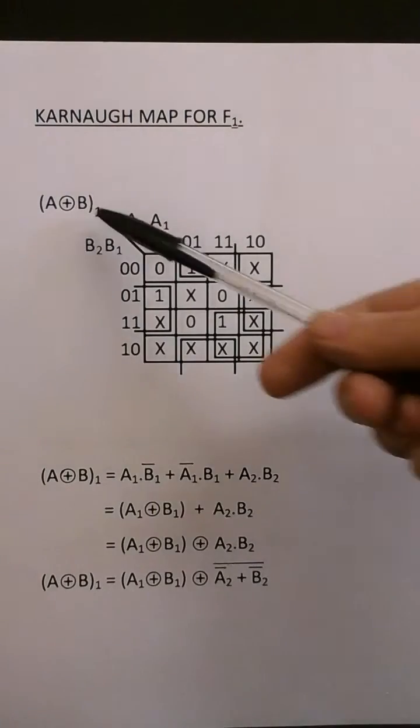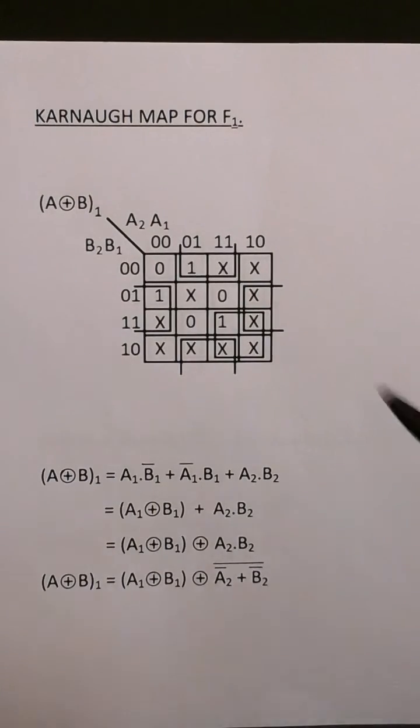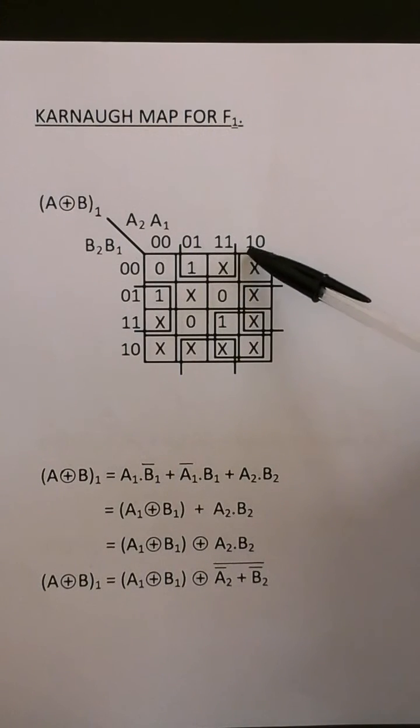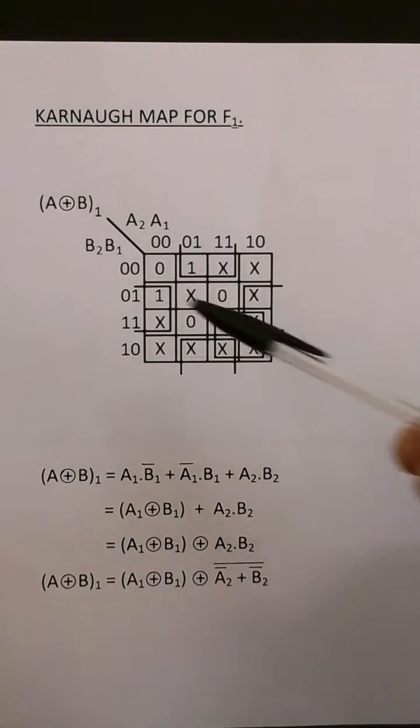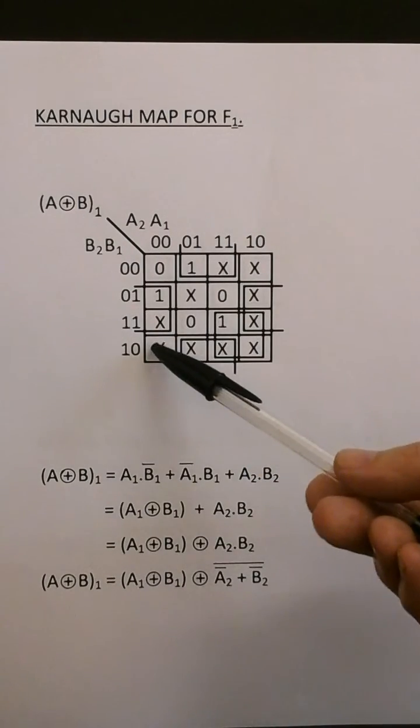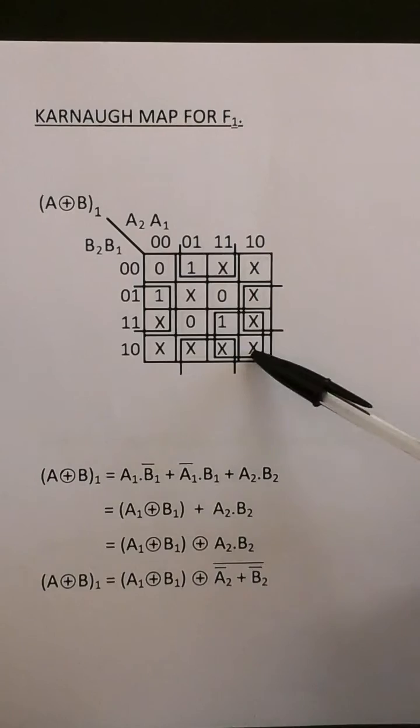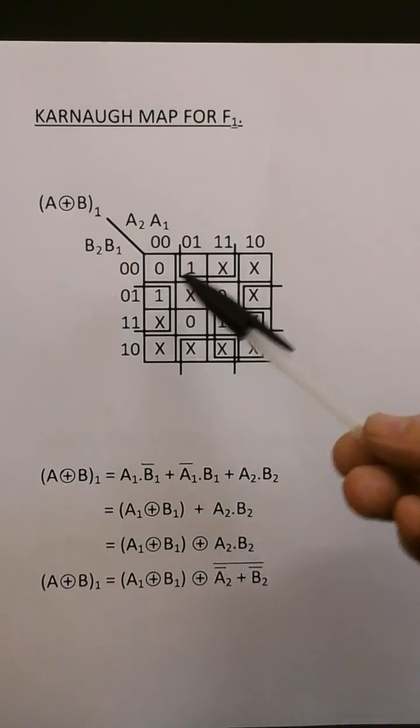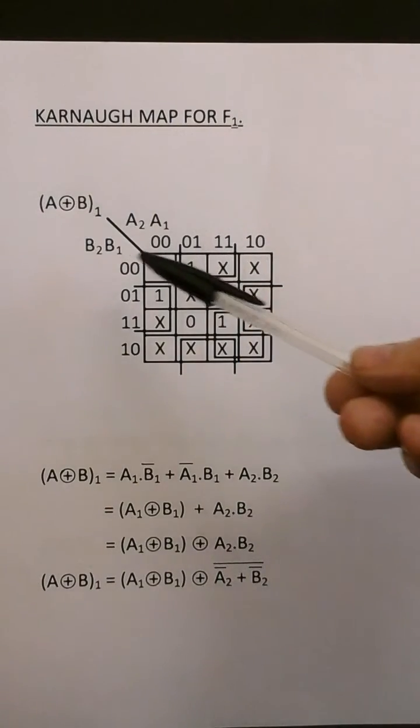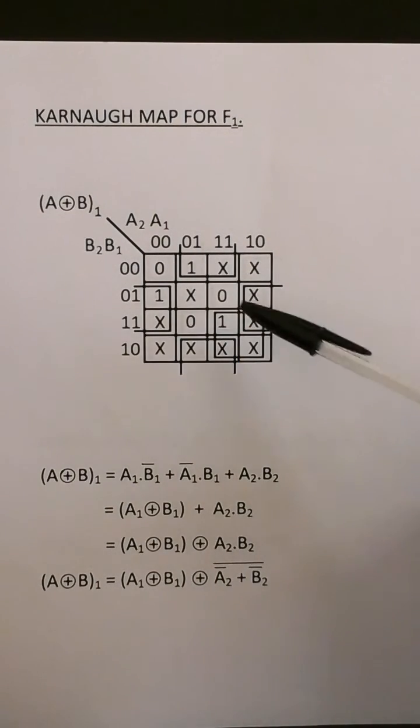So here's the Karnaugh map for f1. It's a 4 variable Karnaugh map. Condition A2 is 1 and A1 is 0 is a don't care state. It can't happen. And similarly, B2 is 1 and B1 is 0 is a don't care state because it can't happen.